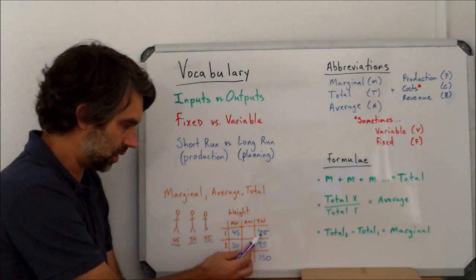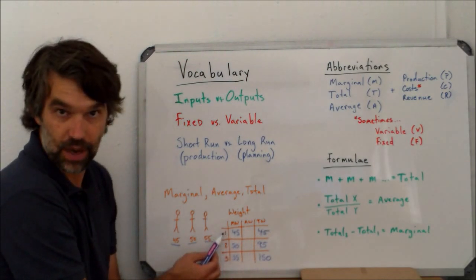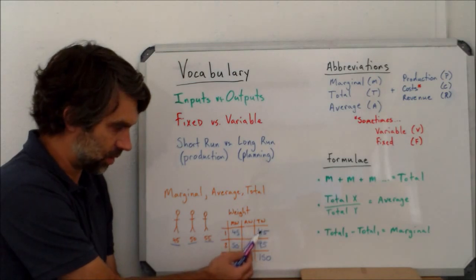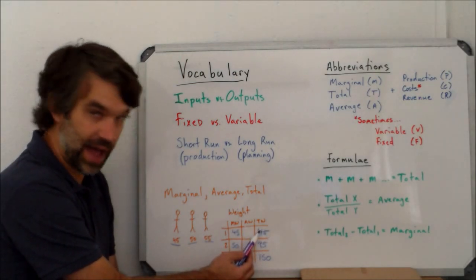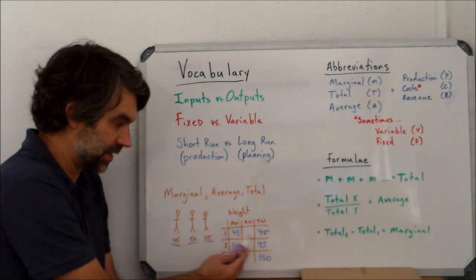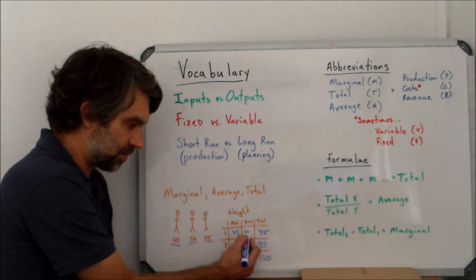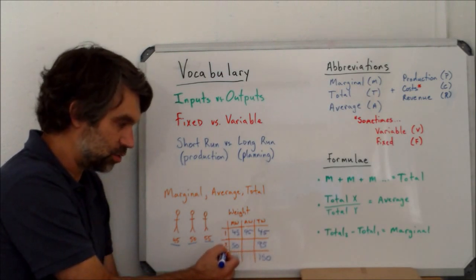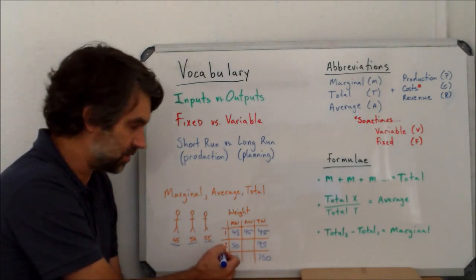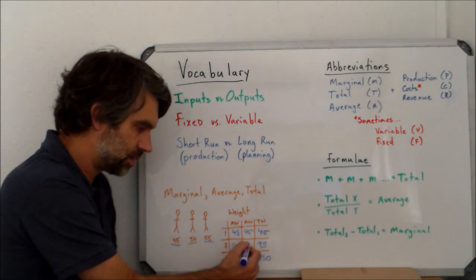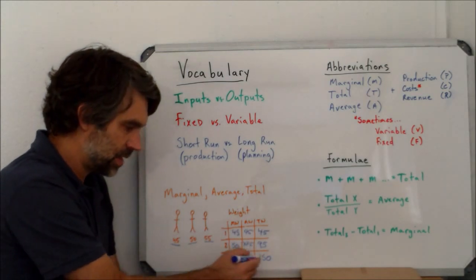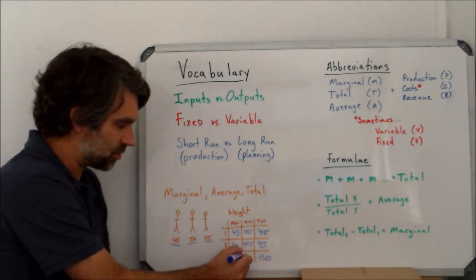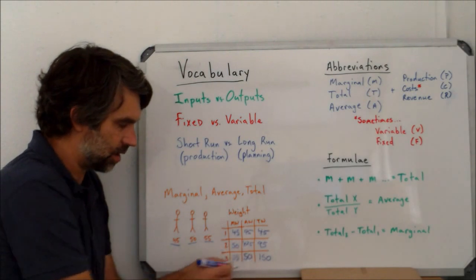The average weight then is just the total divided by the number of people you're considering. In this first row, the total weight is 45, spread out amongst one person, so this is 45 as well. But now we have 95 divided amongst two people. That's going to be 47.5. And then we have 150 total spread out over three people. So the average weight there is 50.